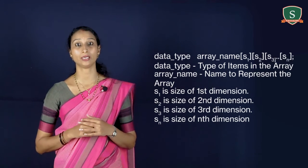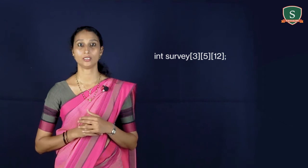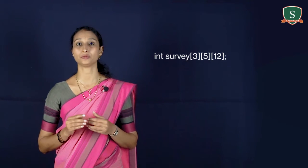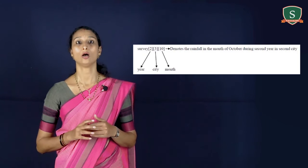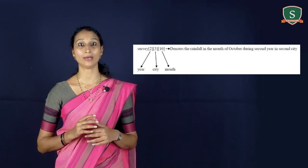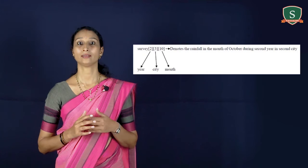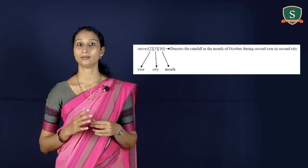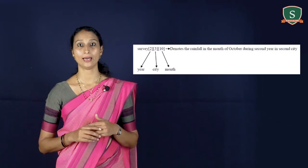Consider the example: int survey[3][5][12]. The total memory is 3 × 5 × 12 × size of integer. In this example, array survey may represent survey data of rainfall during three years, from January to December, in five cities. If the first index denotes the year, the second index the city, and the third index the month, the three-dimensional array can be represented as a series of two-dimensional arrays as shown.